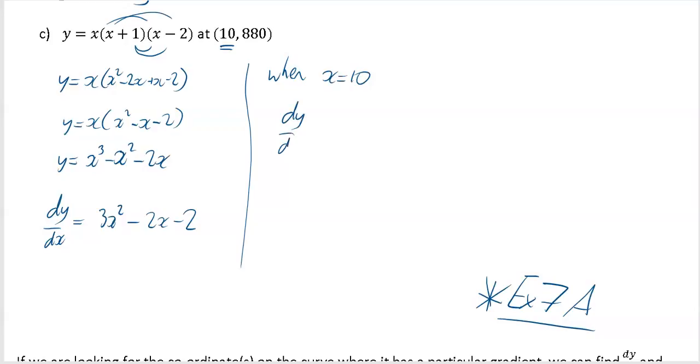dy by dx is equal to, and again we'll set this out very well here, that's going to be 3 times 10 squared minus 2 times the 10 minus 2.